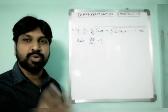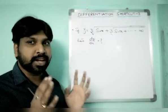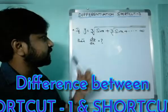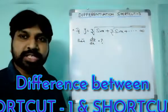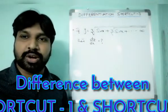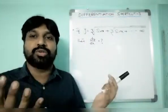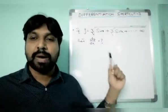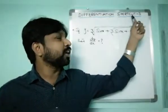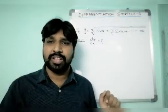This is almost like shortcut number one in differentiation, but please take care — this is not shortcut number one. The difference is that shortcut one exists for square root only, whereas shortcut three works for any root: cube root, fourth root, fifth root, eighth root, hundredth root — any kind of root is possible using this shortcut.